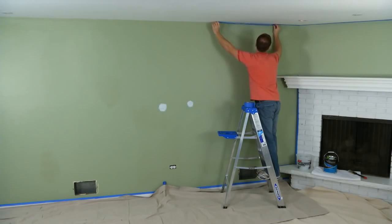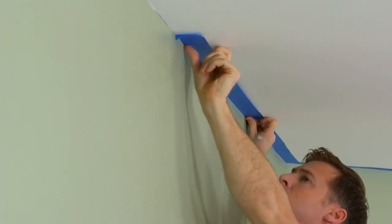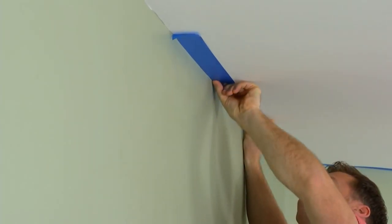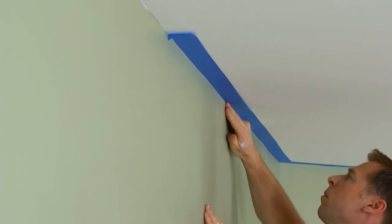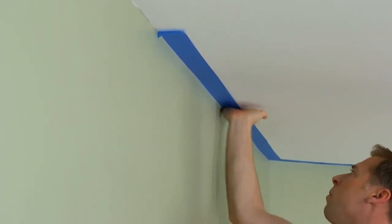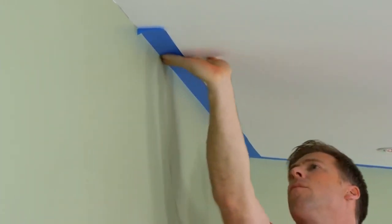Let it dry for 24 hours. Start by applying a long strip of painters tape to the ceiling surface as close to the top of the wall as possible. Slowly pat the tape down as it sticks to the ceiling to avoid any bubbles or wrinkles.